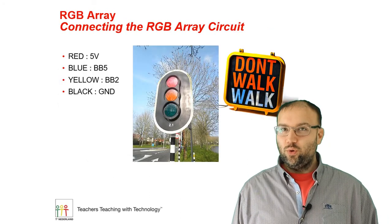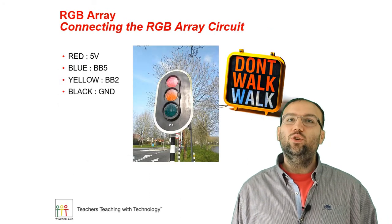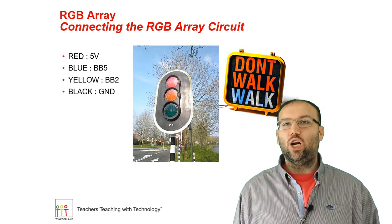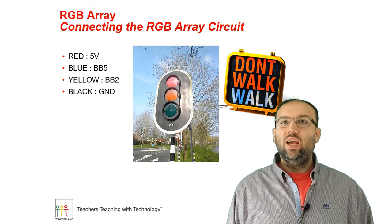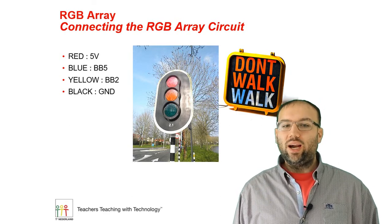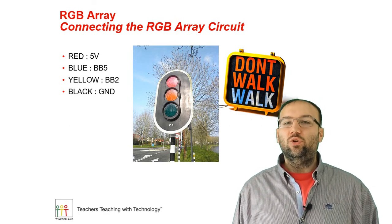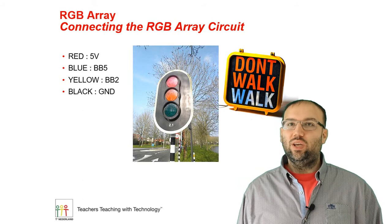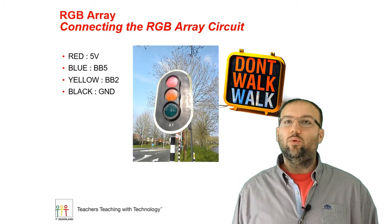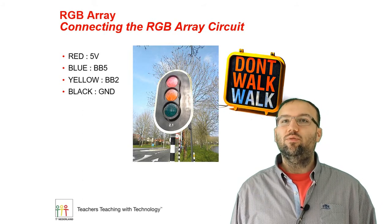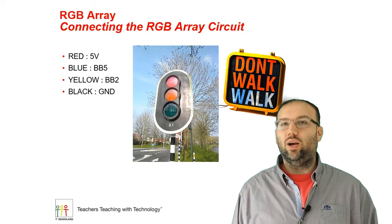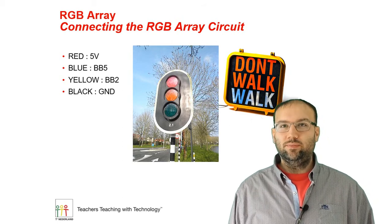To get started, you need to attach the RGB array to the Innovator hub. You can do that with the attached wire. The red wire needs to be connected with 5 volts, the blue wire with BB5, the yellow wire with BB2, and the black wire with ground.